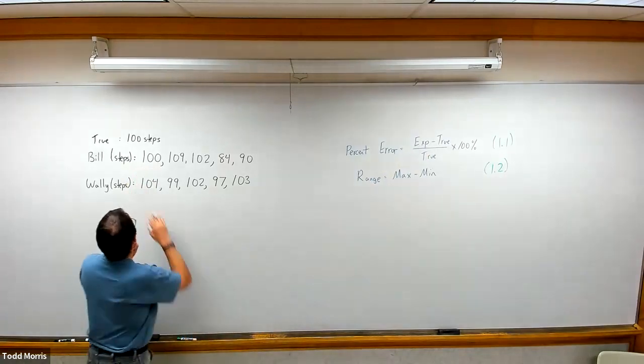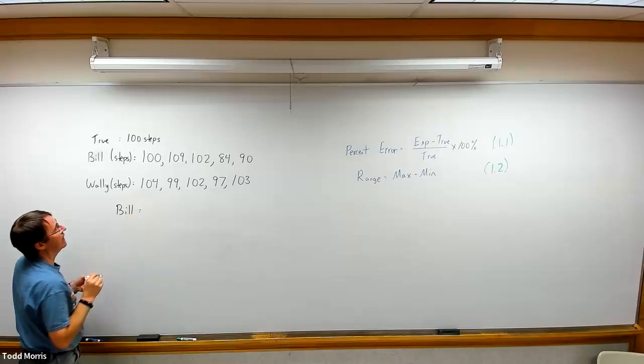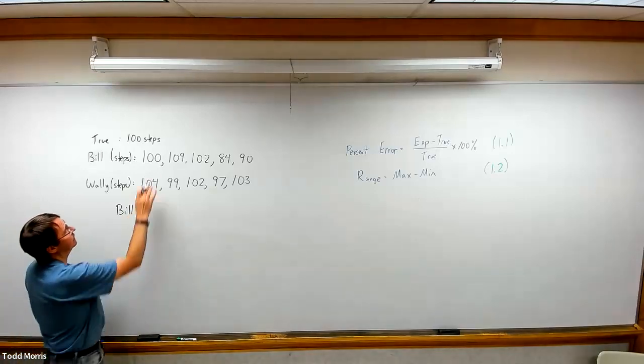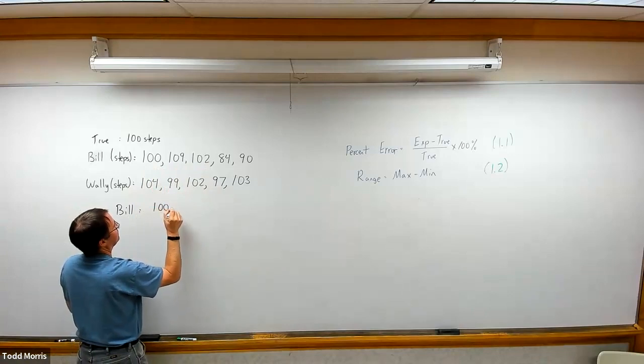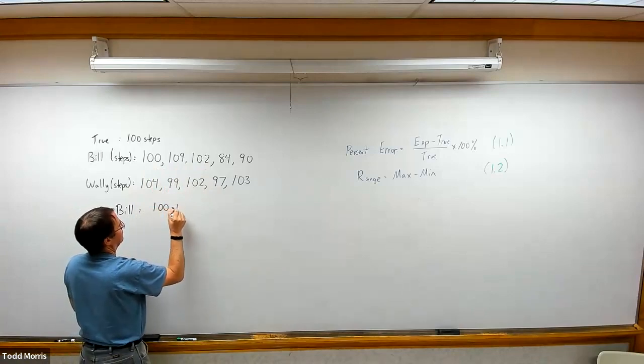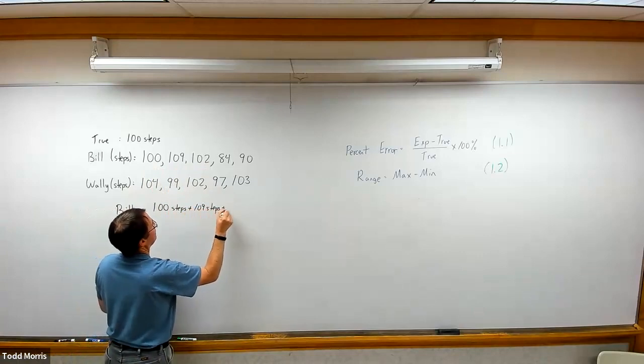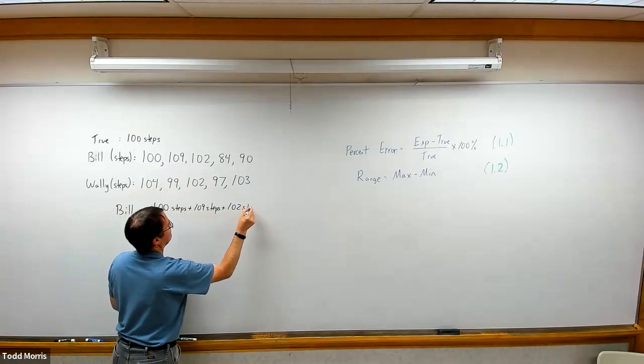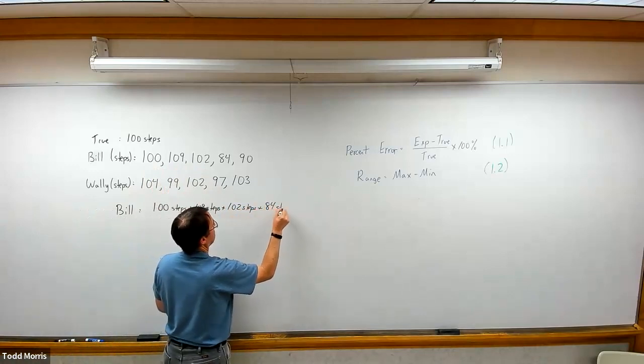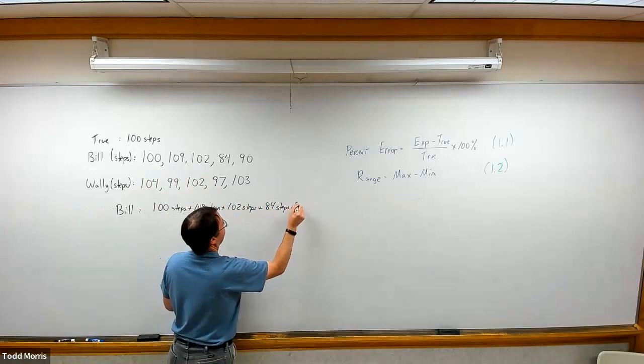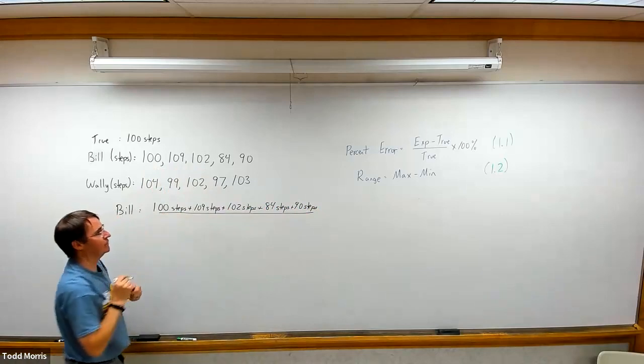To do that, we'll find the average for Bill. To find average, all we need to do is take the individual numbers. All these are going to be in step units. 100 steps, plus 109 steps, plus 102 steps, plus 84 steps, plus 90 steps finally.